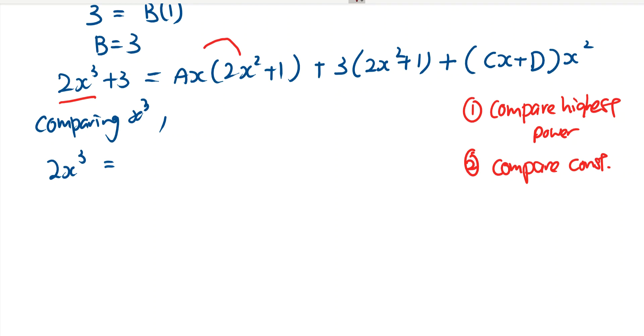Any more 2x cubed? And we actually have one more, which is cx times x squared. So I have ax times 2x squared, plus cx times x squared. So 2 equals 2a plus c.